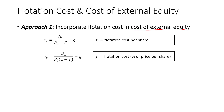There are two variants of the formula. The cost of equity, R sub E, would be equal to the next period's dividend D sub 1, divided by the current share price minus the flotation cost, where uppercase F represents the flotation cost per share in monetary terms. We then add the expected growth rate.